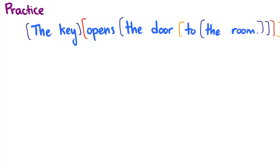So it looks like we have a fairly good structure: 'the key opens the door to the room,' 'the door to the room,' 'to the room,' and then 'the room.' That's a pretty good structure. If you wanted to draw a tree for this, you could. If you have any questions about these constituency tests, please leave them in the comments and I will do my best to respond to them.